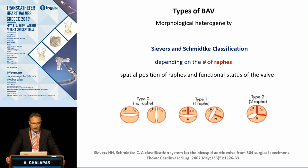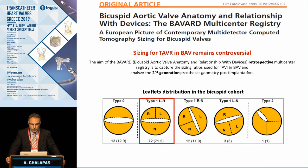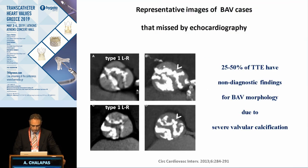Regarding the morphological heterogeneity, there are different classification patterns. The most commonly used is the one from Sievers, which classifies bicuspid valves according to the number of raphes: type 0 with no raphe, type 1 with one raphe, and type 2 with two raphes. The most common type is type 1 with left-right fusion, often characterized by an asymmetric non-coronary sinus. The least common is type 1 with left and non-cusp fusion at 3%, and type 2 with two raphes at 1%.